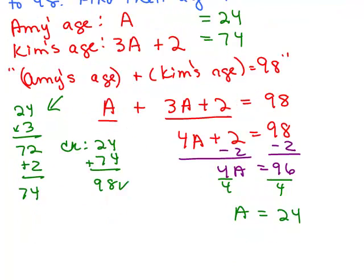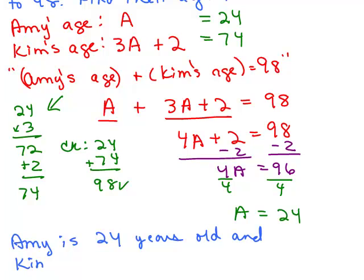So now we know that it's correct. We could write down the answer: Amy is 24 years old and Kim is 74 years old.